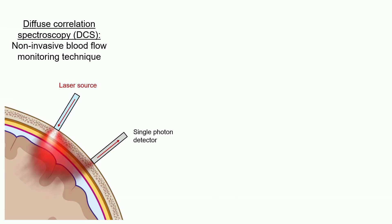Diffuse correlation spectroscopy, or DCS, is an optical technology used to measure blood flow and is typically applied for neuromonitoring.